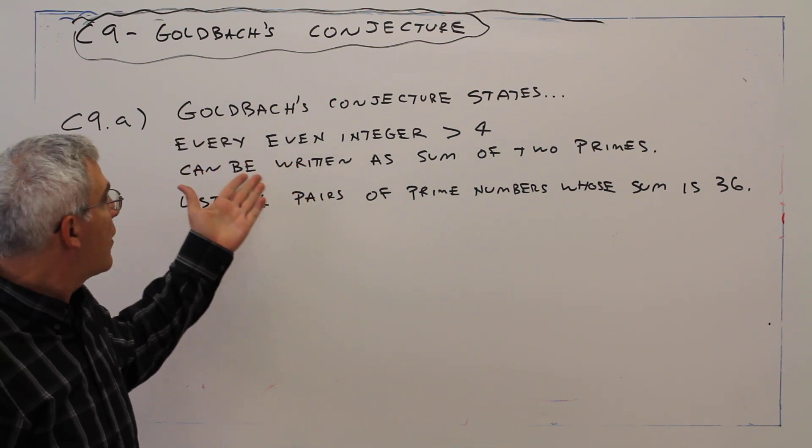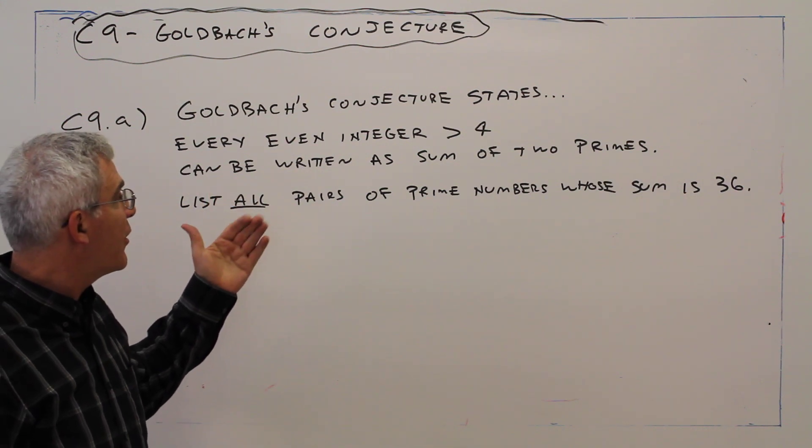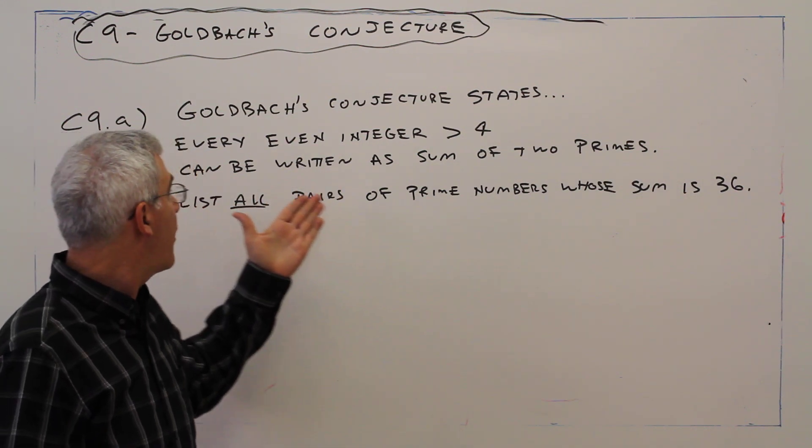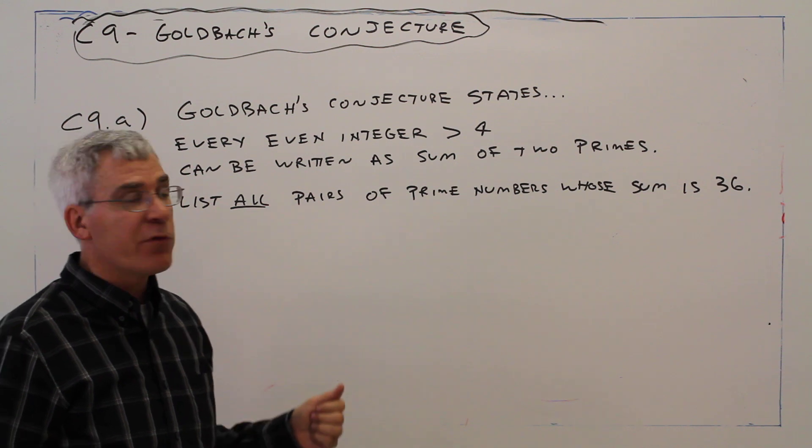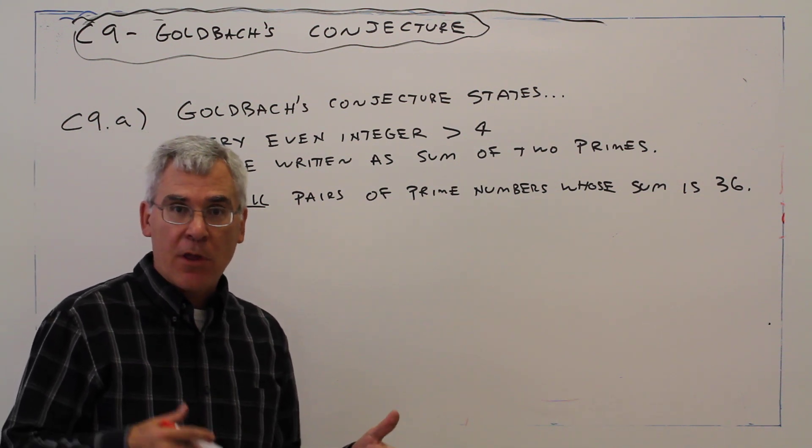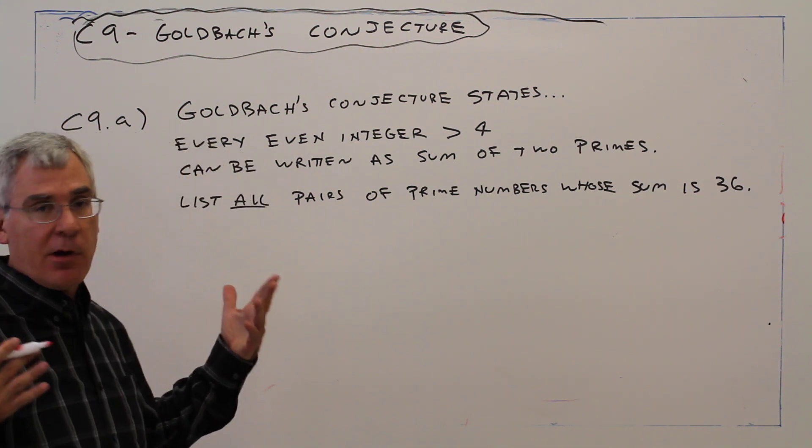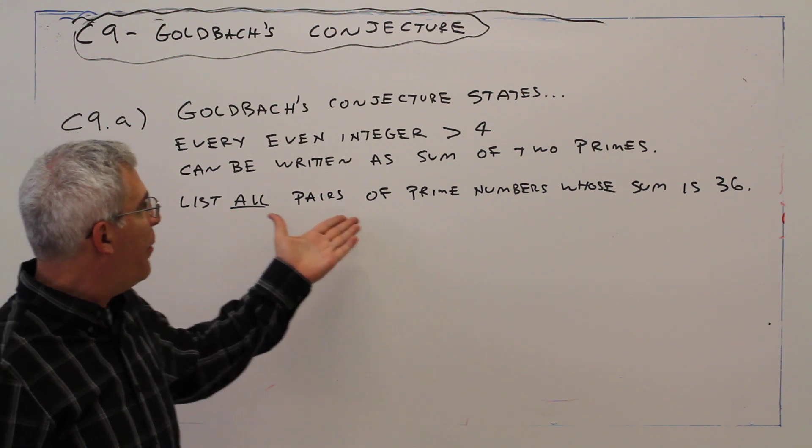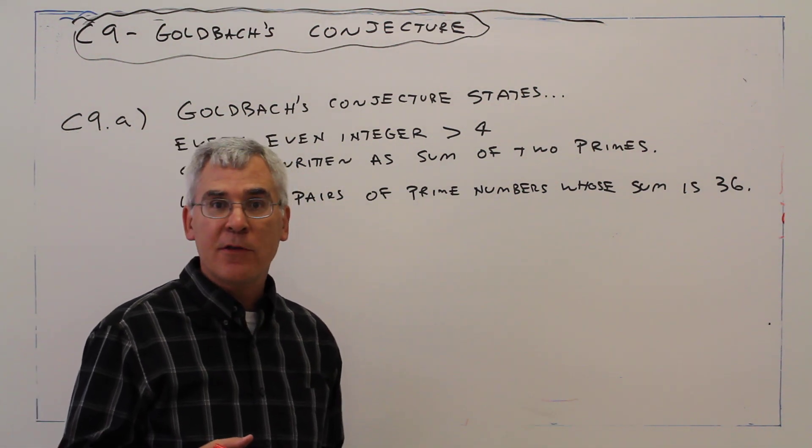Goldbach's Conjecture states every even integer greater than 4 can be written as the sum of 2 primes. And here's just one particular problem. List all pairs of prime numbers whose sum is 36.